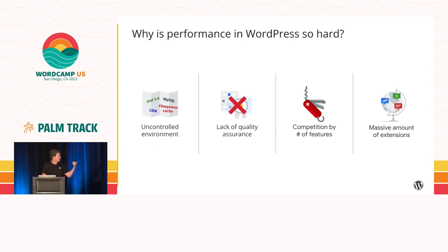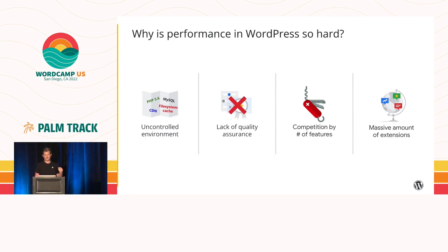That indirectly leads to the third challenge. Many WordPress plugins, and sometimes even themes, compete against each other simply by the number of features they offer. That results in bloated solutions, which makes performance even worse, or at least even harder to achieve. Due to the lack of quality criteria for plugins and themes shown to end users, that's really the only thing end users can look at. This is how the WordPress ecosystem works today, but I think we need a shift there.